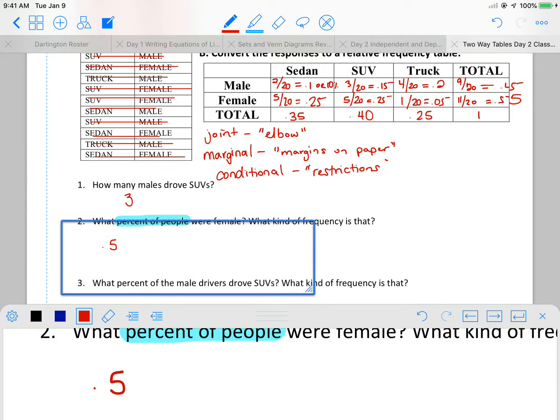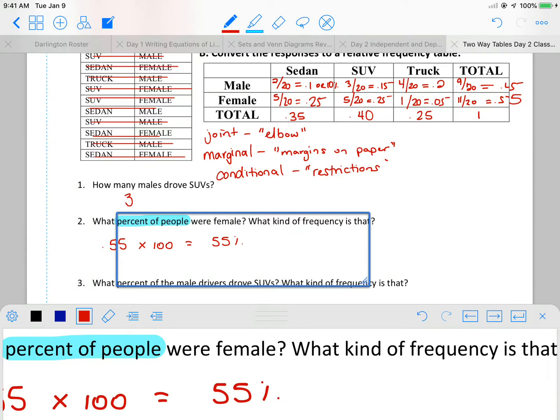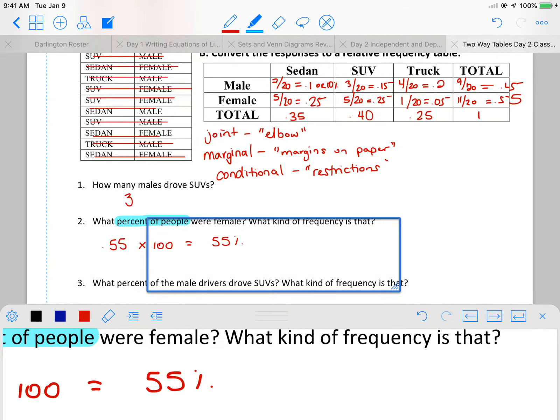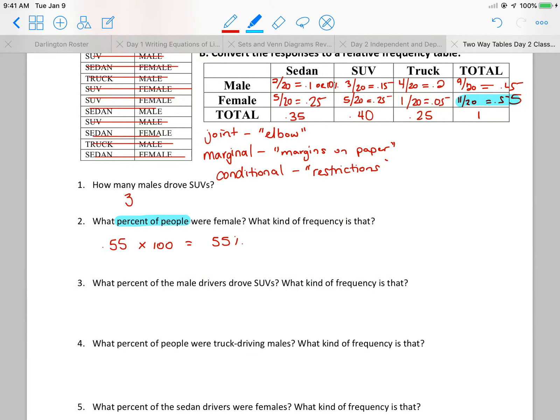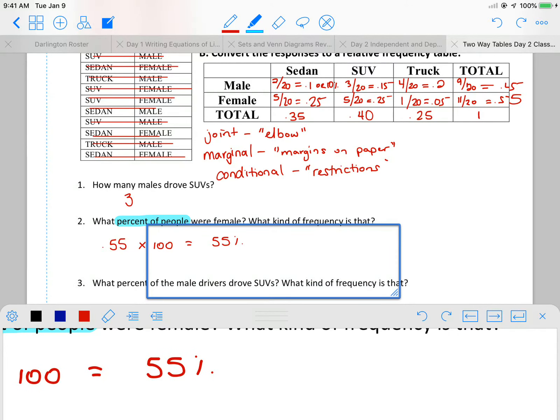Now the next question, what kind of frequency? Did I get it where two pieces meet at like an elbow joint? Did I get it on the outside edges of my table like the margins on a paper? Or was my sample space restricted? So because it came from the outside on this paper here, that is going to be marginal frequency. It's all based off of where did I find it? Marginal frequency.